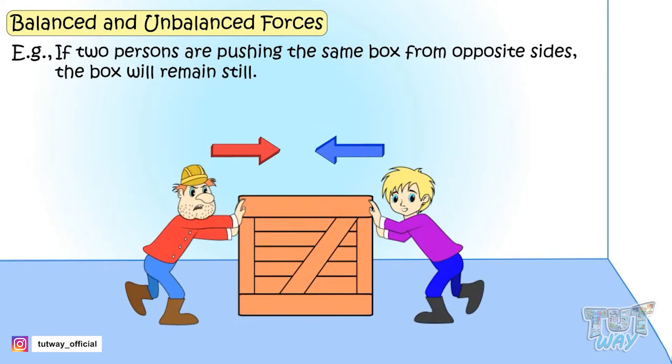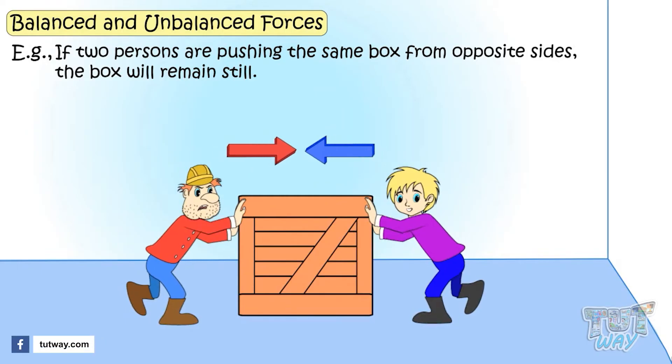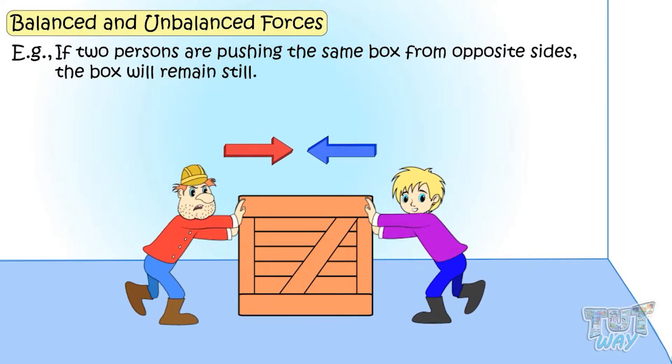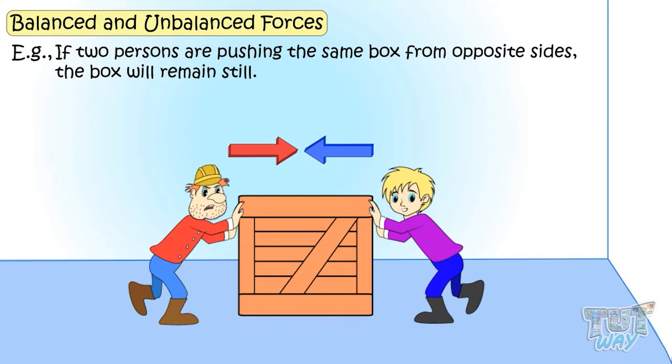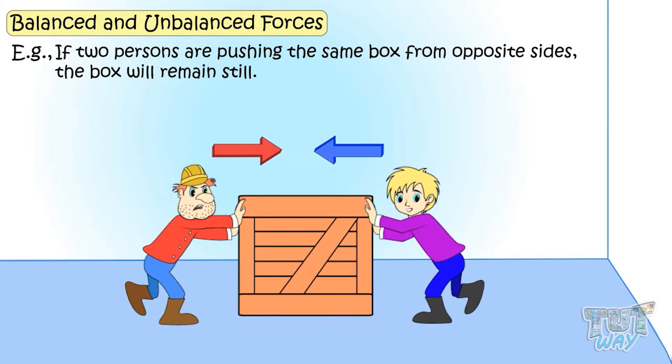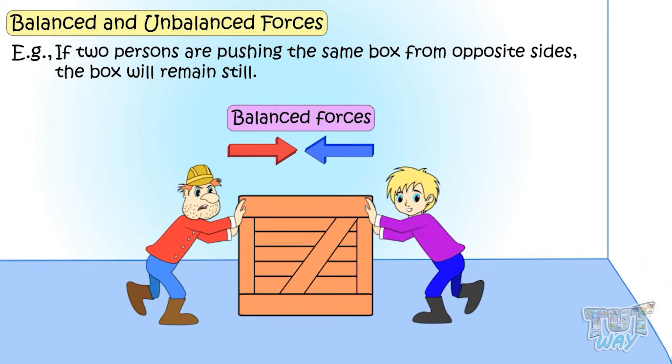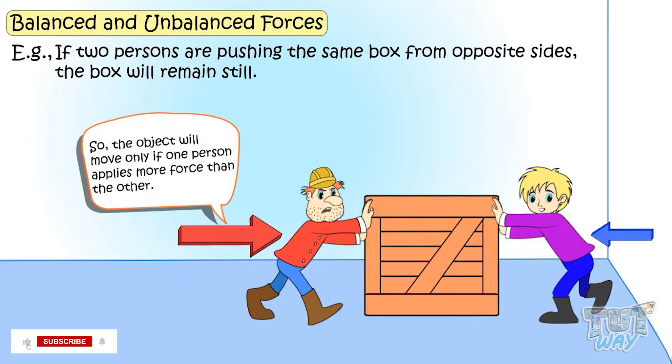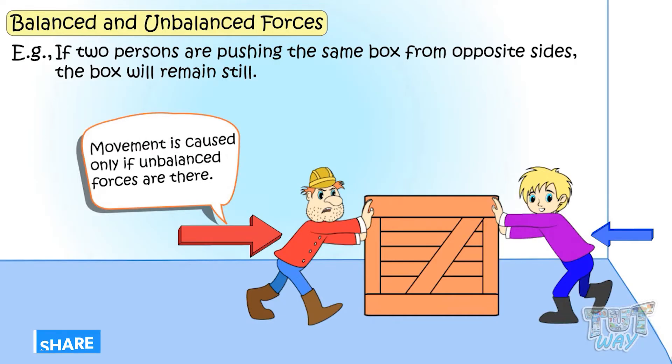If there is an object and two persons are pushing it from opposite sides, the object will stay still or will not move if the force acting on both sides is the same. That is, balanced forces are acting on it. So the object will move only if one of the persons applies more force than the other. That is, there is an imbalance in the forces. So movement is caused only if unbalanced forces are there.